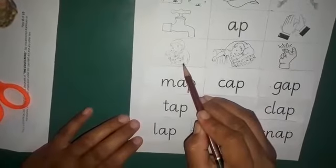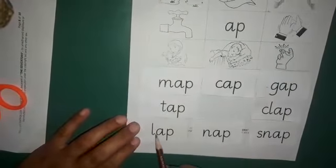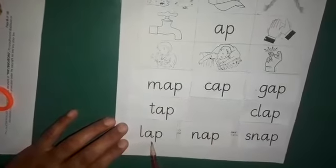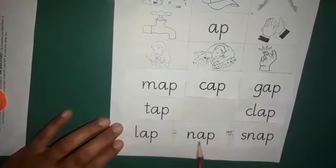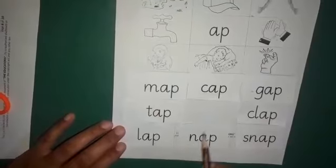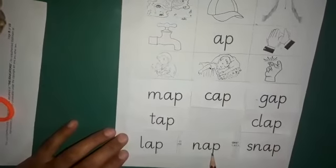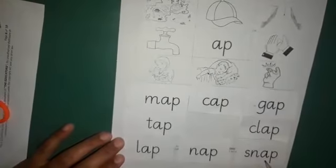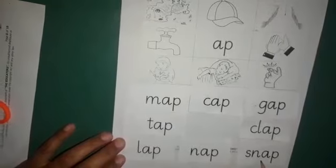The next picture is lap and the initial sound of lap is la. The next picture is nap. The initial sound is N, A, P, nap. And snap, the initial sound of snap is S, and nap.